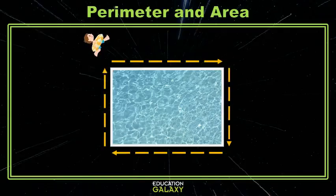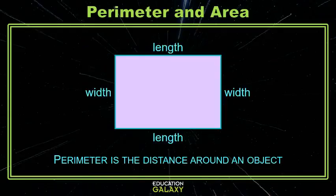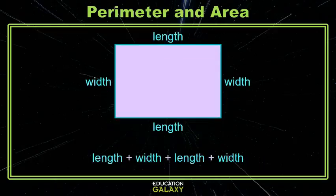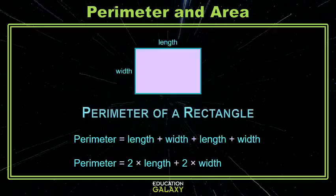For rectangles, which have two pairs of sides the same length, we can just add the width twice and the length twice. Sometimes you'll see that written as more of a formula: two times length plus two times width.